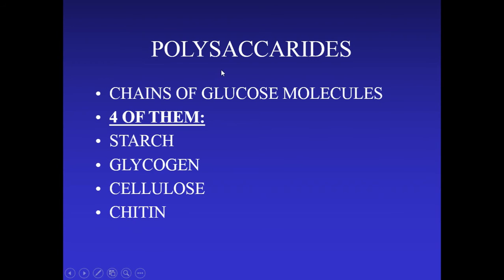Polysaccharides are made of many thousands of monomers joined together. Starch, glycogen, cellulose, and chitin are all polysaccharides. These are all isomers of one another because they contain the same monomer — glucose — just with different arrangements in their large structures.